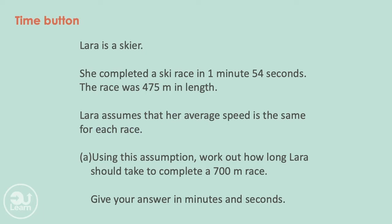A slightly different question. Lara is a skier. She completed a ski race in 1 minute and 54 seconds. The race was 475 meters in length. Lara assumes that her average speed is the same for each race. Using this assumption, work out how long Lara should take to complete a 700 meter race. Give your answer in minutes and seconds. If we assume her average speed is the same, that means the distance is directly proportional to the time.